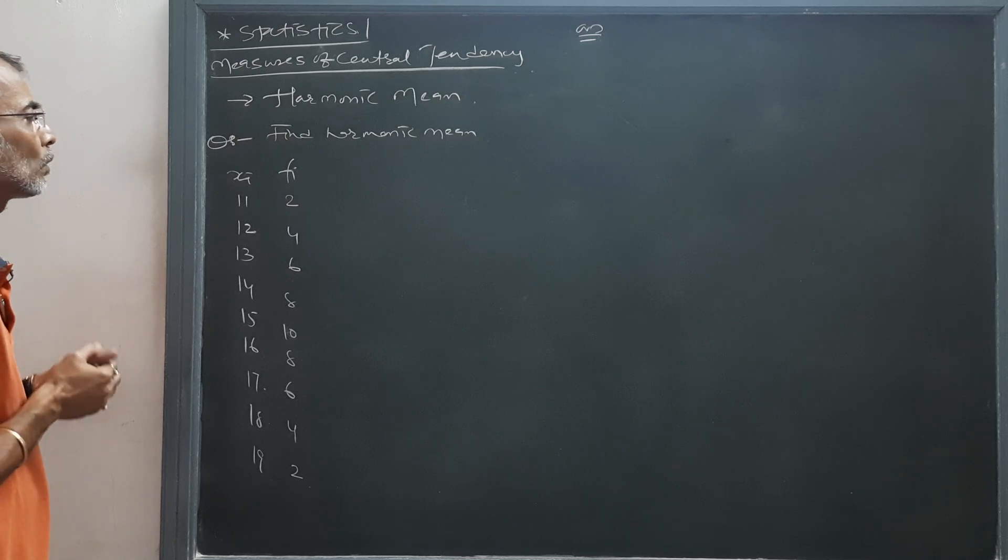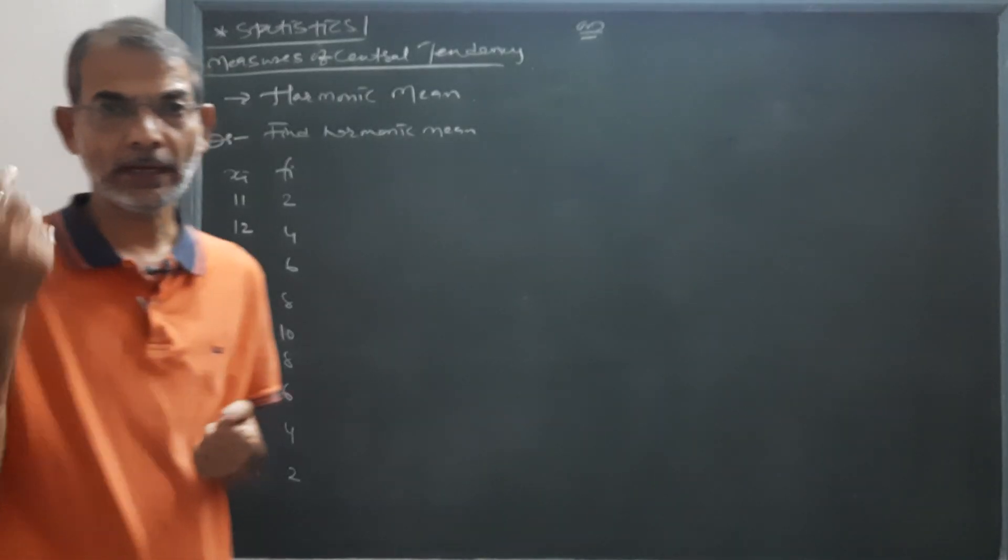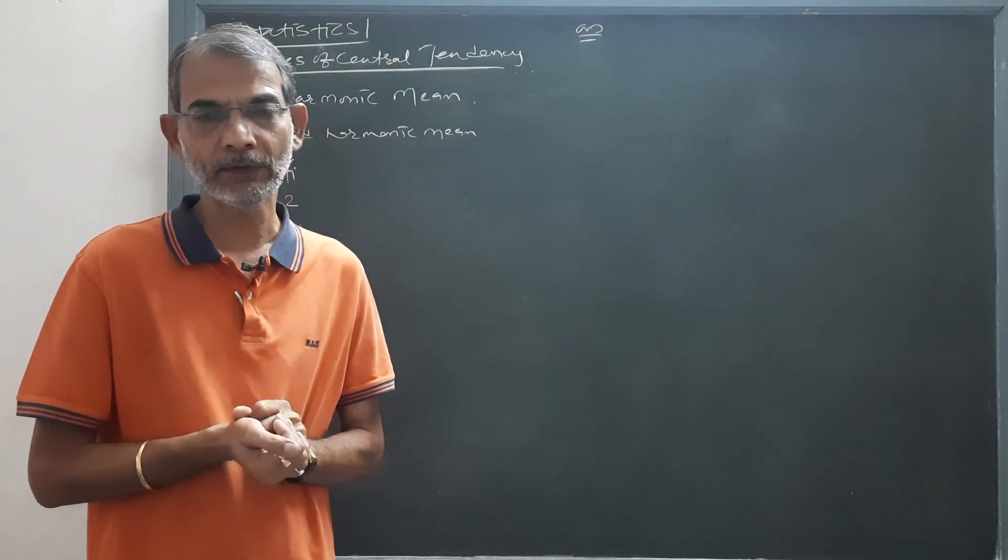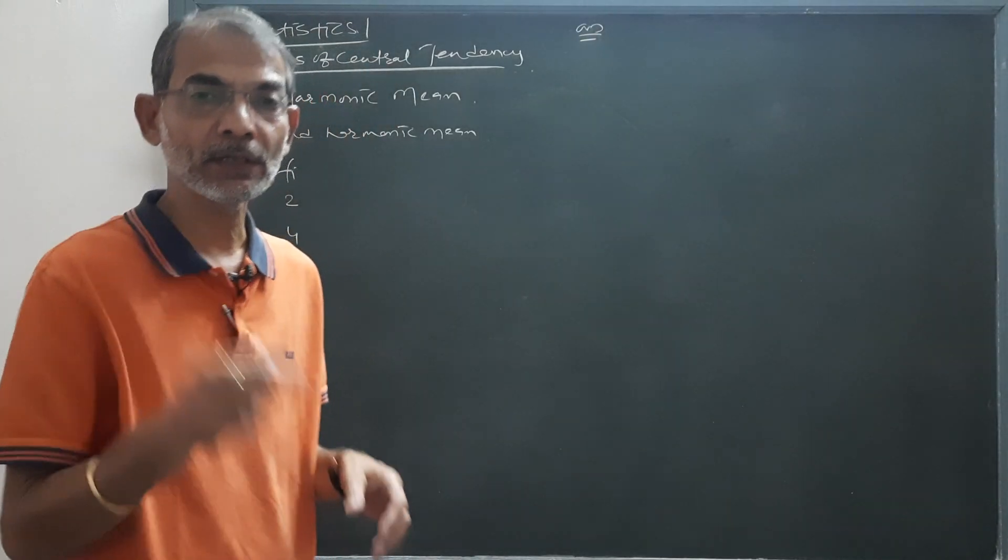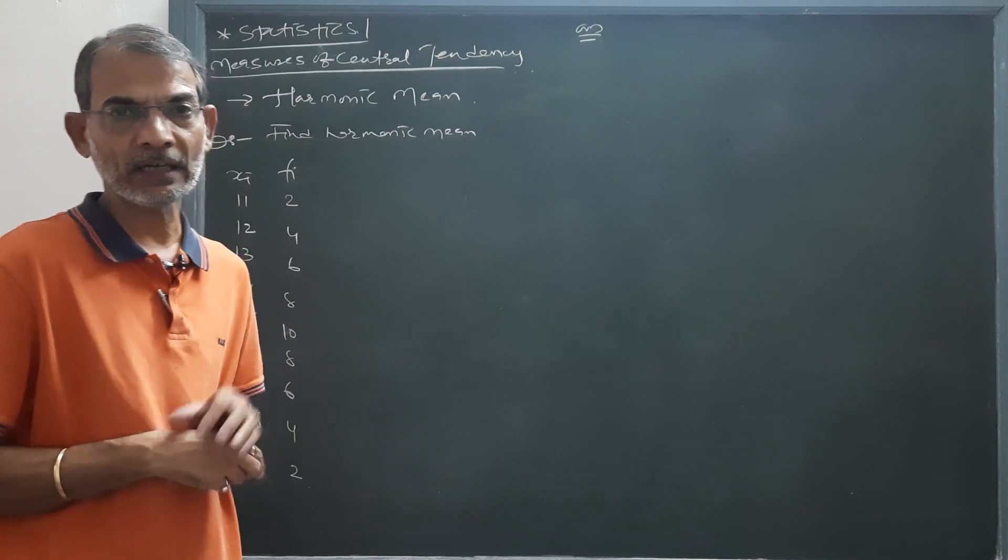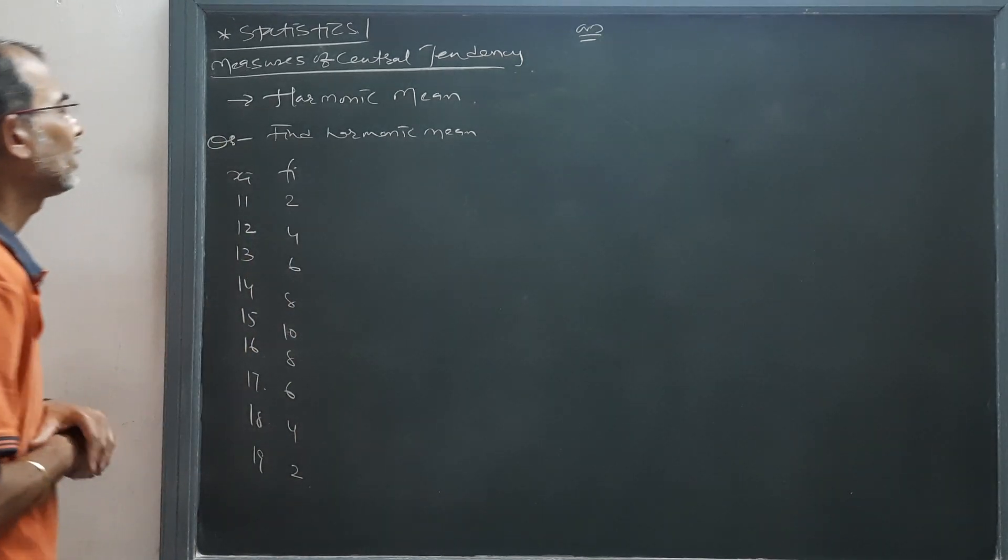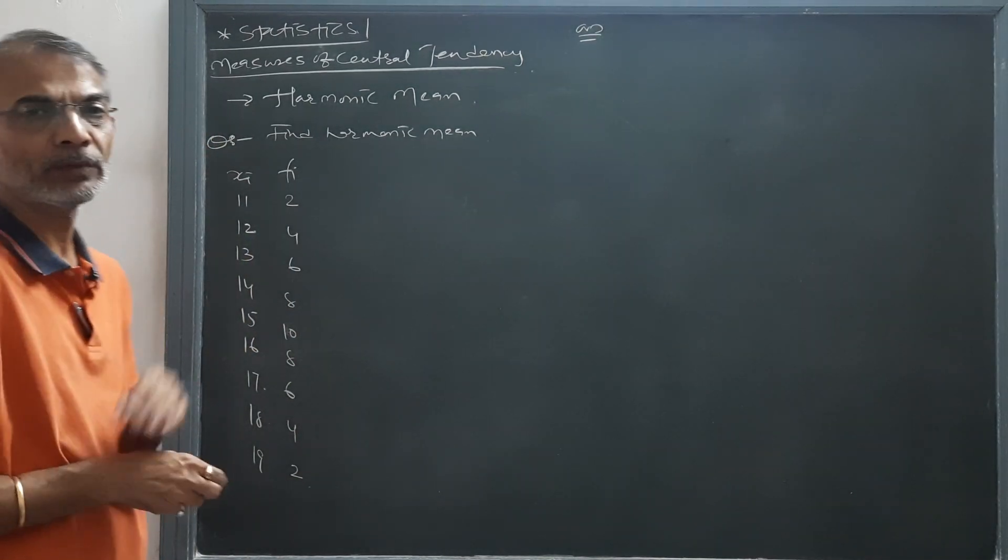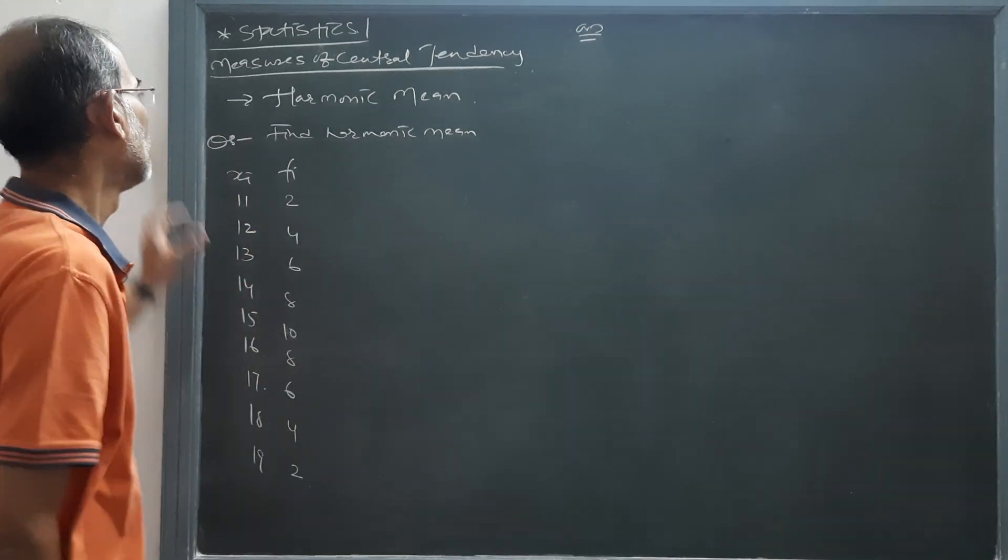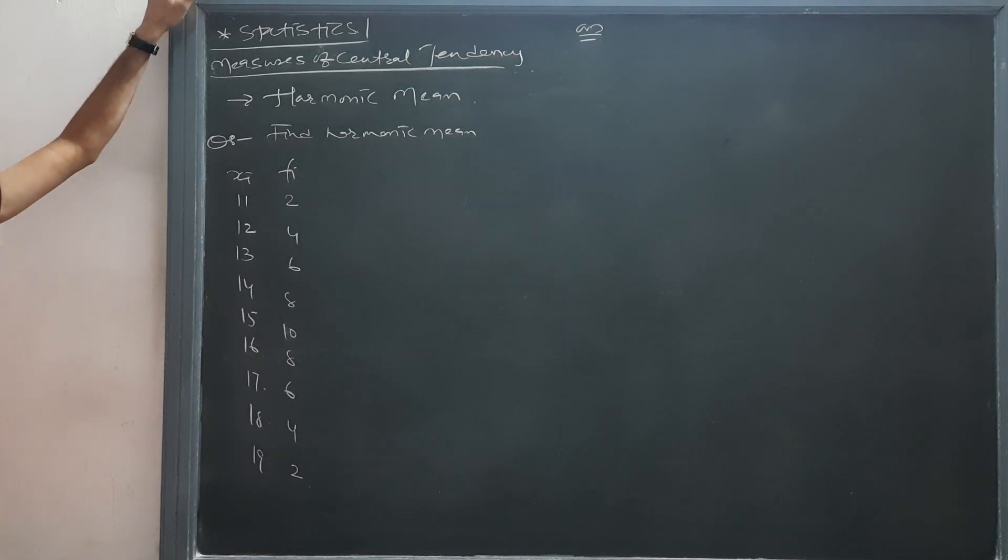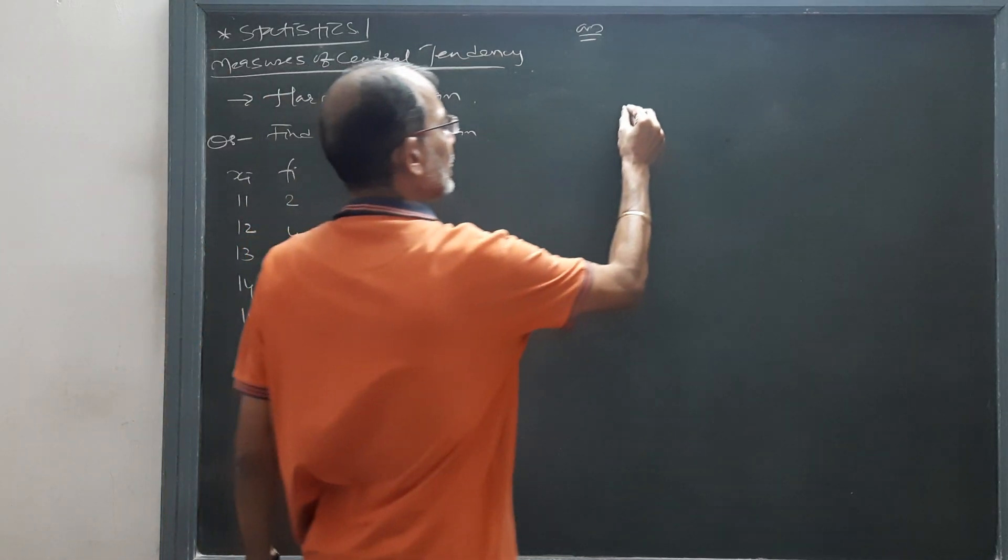You can see the question is find harmonic mean. xi and fi are given. This chapter belongs to measures of central tendency in statistics. The chapter is measures of central tendency, under that the topic is harmonic mean.